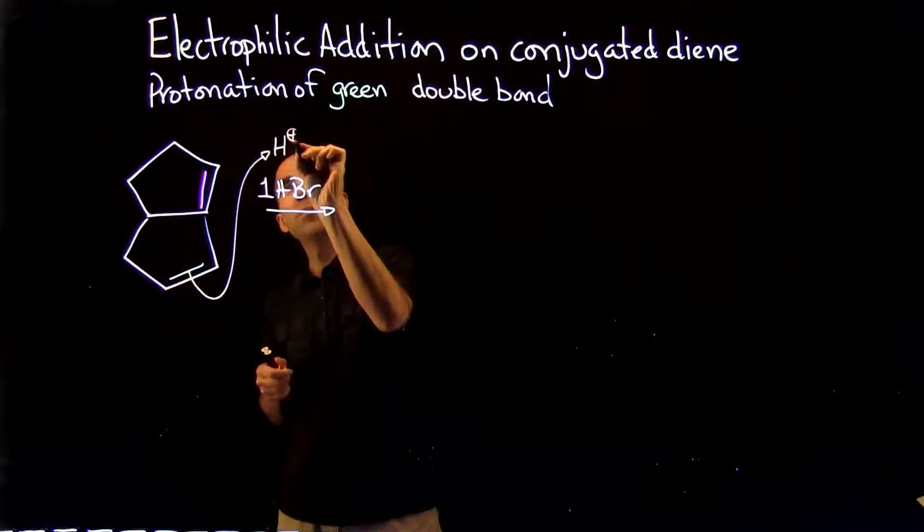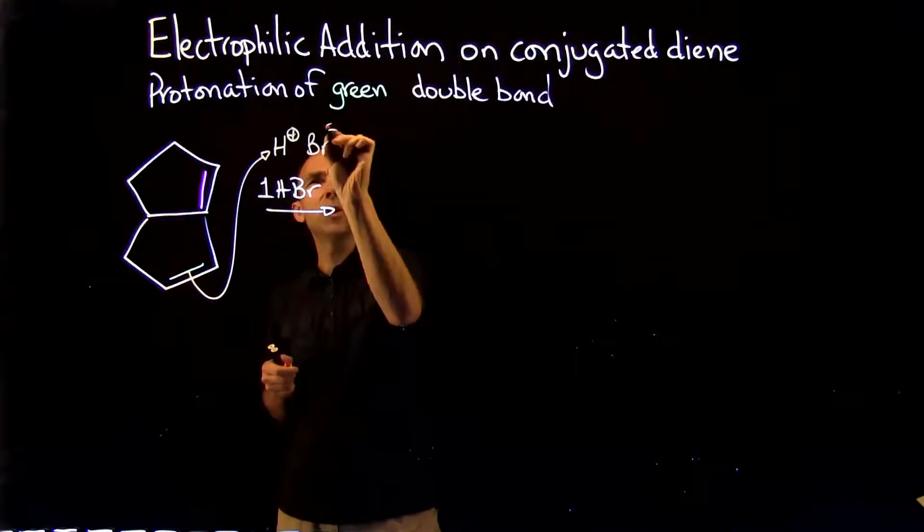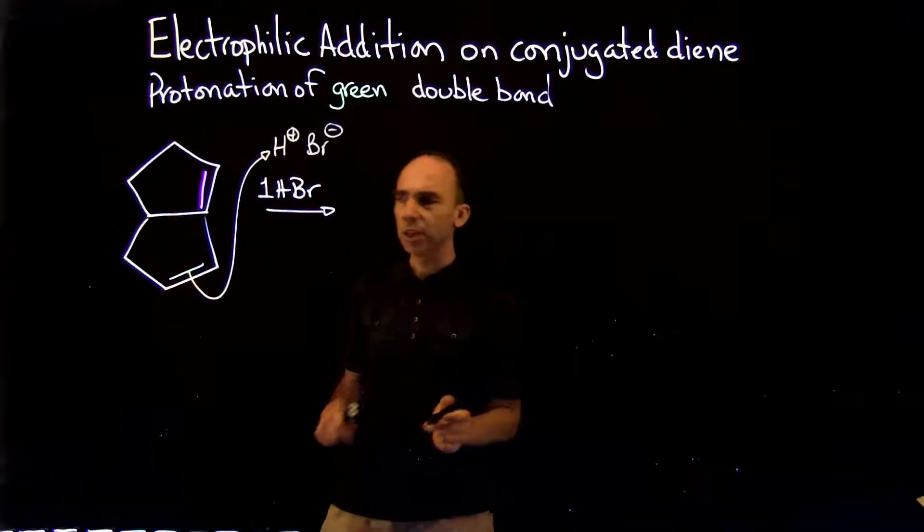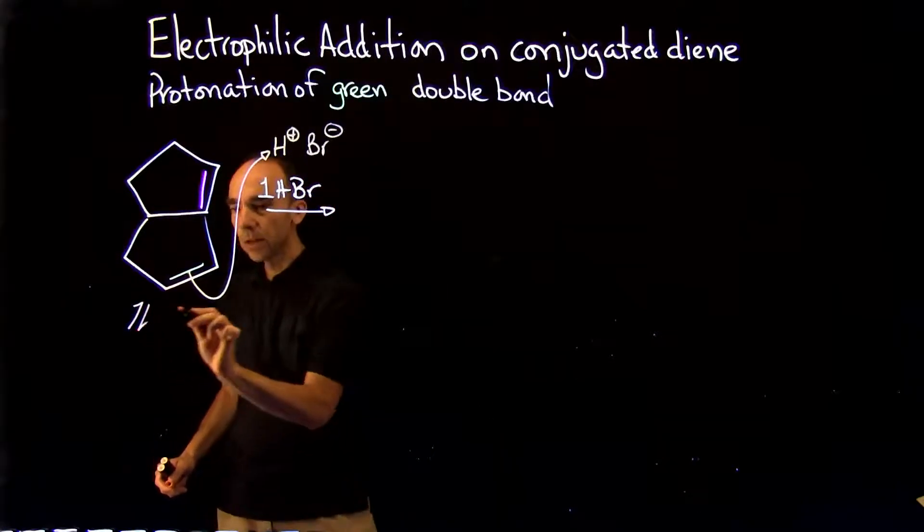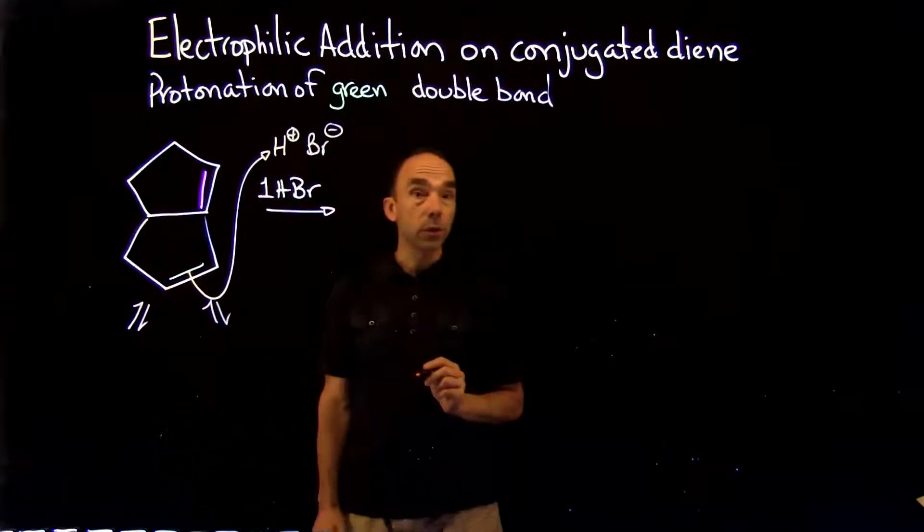We're going to be looking at the protonation of the green double bond. Initial step, protonation. The double bond, electron rich, will react with the proton, electron poor, to give two possible intermediates.